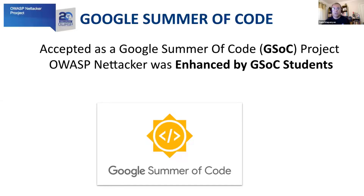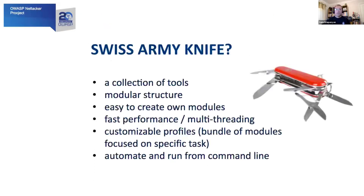It usually runs from March every year until the end of August. You can think of OWASP NetHacker as a Swiss Army Knife kind of tool, because just like a Swiss Army Knife, it is a collection of tools with a modular structure. It's relatively easy to create your own modules — we recently changed how you write modules from Python to YAML, which I'll talk about a little bit later. It is a fast-performing tool because it uses multi-threading, which you can control using Python's multi-threading model. It also has customizable profiles, which are bundles of modules focused on a specific task — you can pull out several blades from your Swiss Army Knife to perform a task more quickly or efficiently.